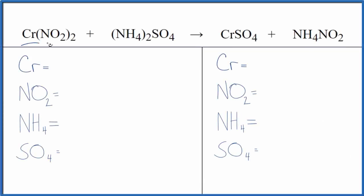Let's balance the equation for Cr(NO₂)₂ plus (NH₄)₂SO₄. So we have chromium 2 nitrite and then we have ammonium sulfate. And we're going to use a trick to make this a lot easier to balance.